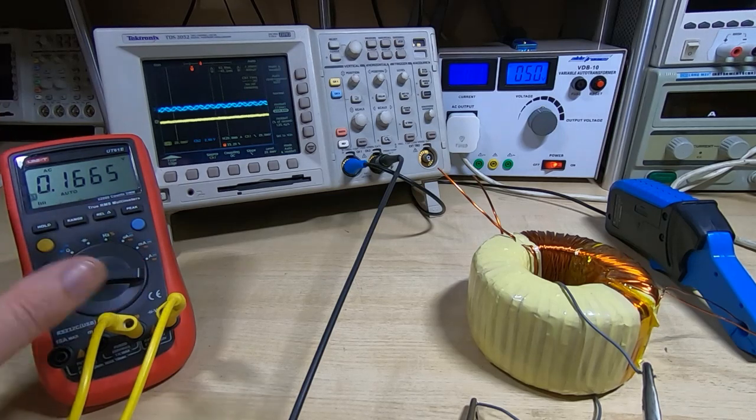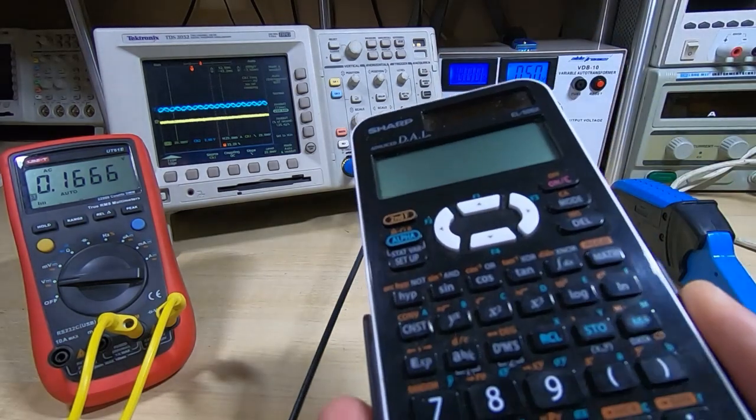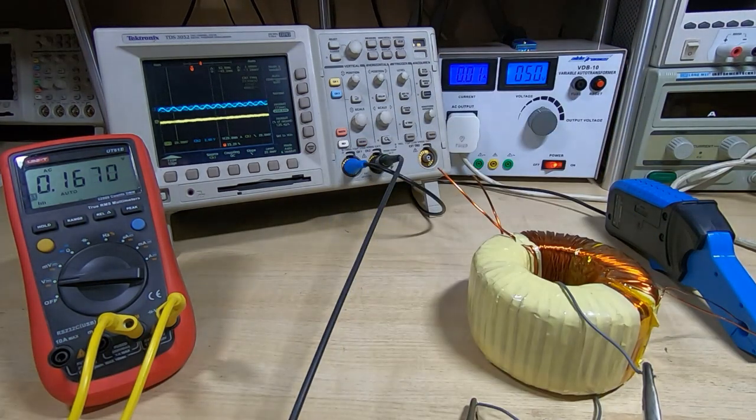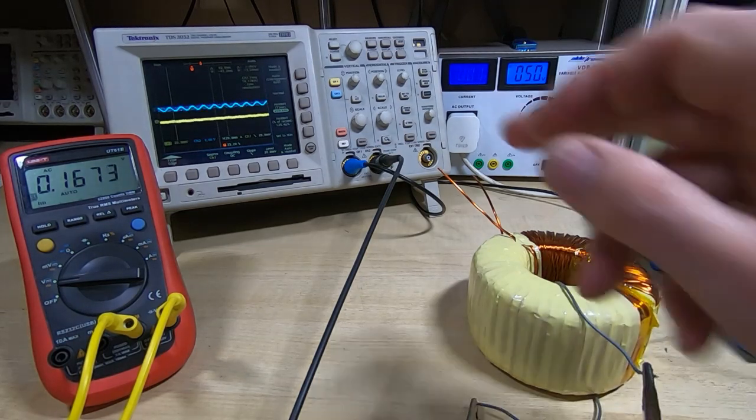What we can now do is take a calculator and work out the number of turns on the primary of this transformer. We know that a single turn will give us 167 millivolts.